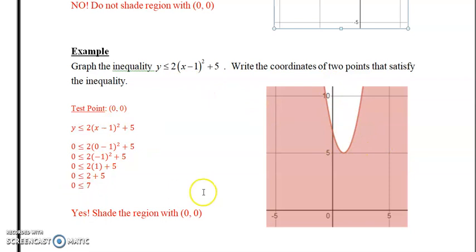When you do the test point, 0, 0 did satisfy it. So there's a lot of points that will work here. So again, these are just two points that I've picked. There's an infinite number of points that will satisfy this.